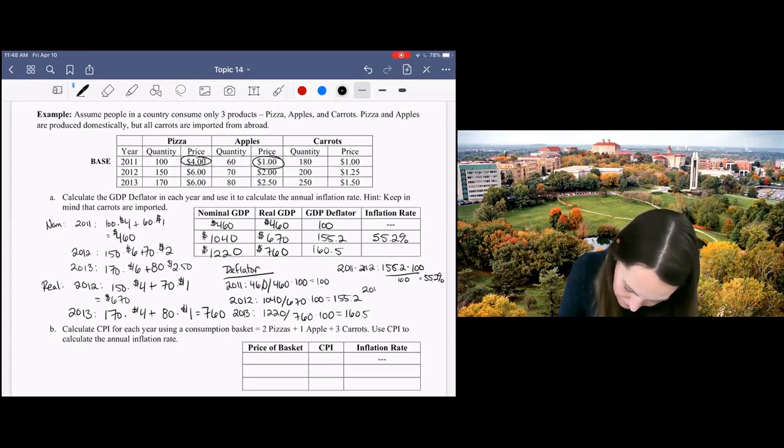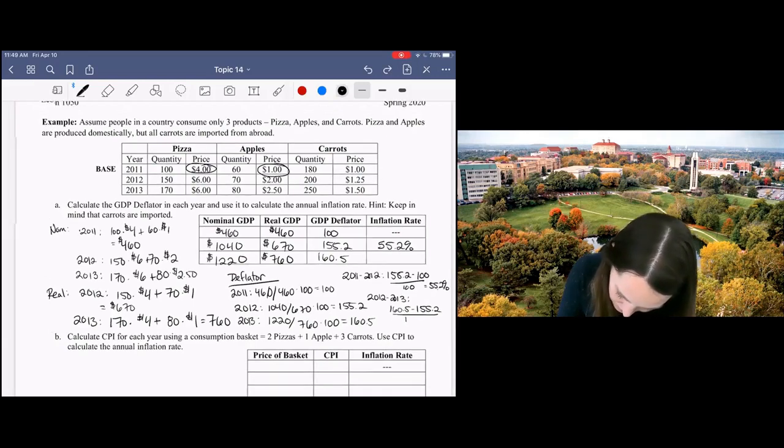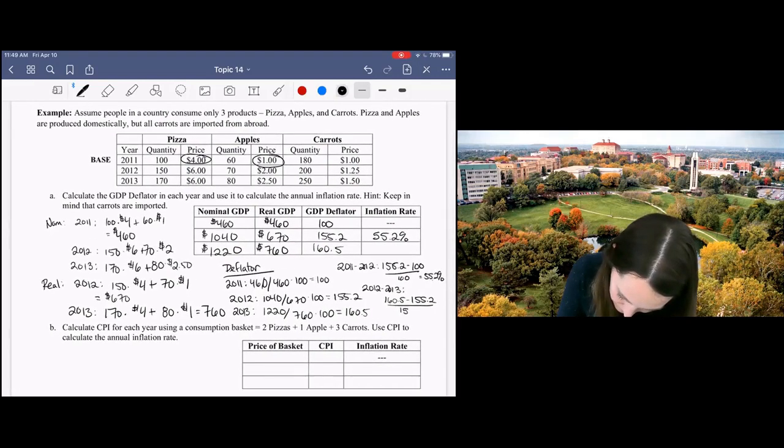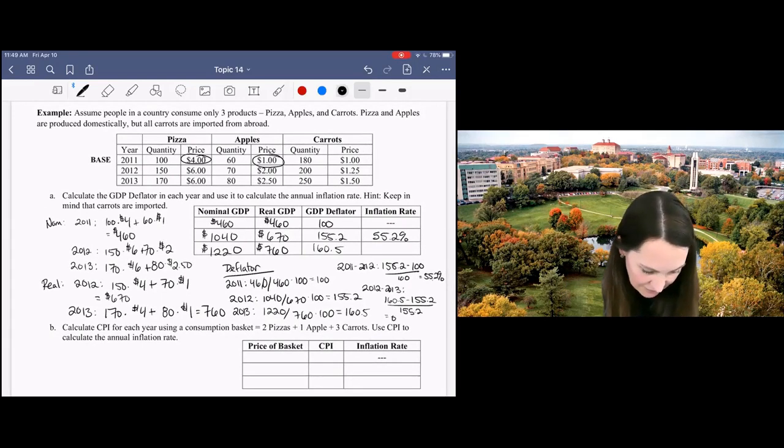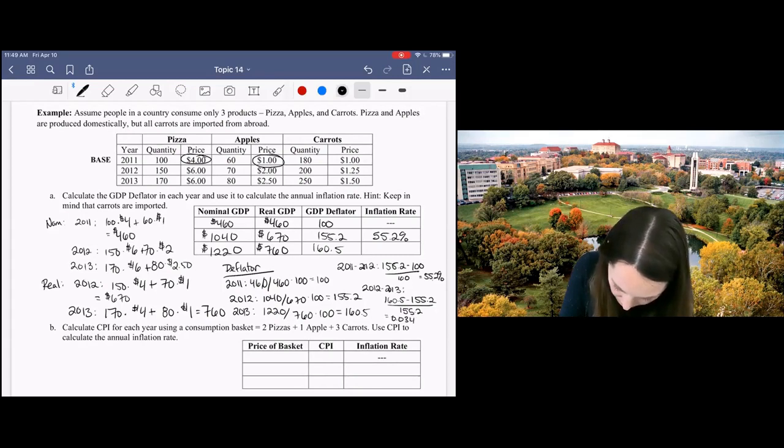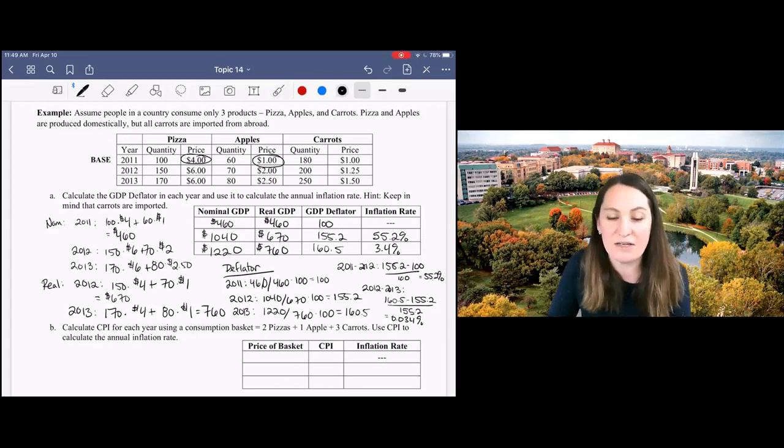And then from 2012 to 2013, I've got 160.2 minus 155.2 divided by 155.2, which if you plug into your calculator is going to give you 0.034, or 3.4% rate of inflation.